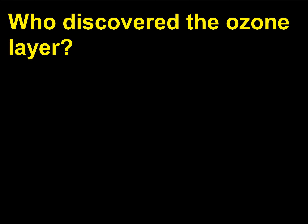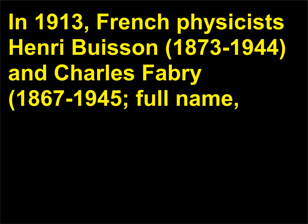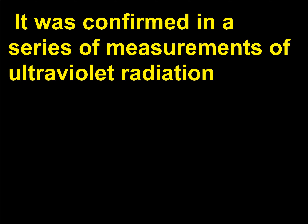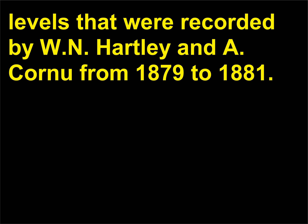Who discovered the ozone layer? In 1913, French physicists Henri Buisson (1873–1944) and Charles Fabry (1867–1945), full name Marie-Paul Augustin Charles Fabry, theorized that an ozone layer existed in the upper atmosphere. It was confirmed in a series of measurements of ultraviolet radiation levels recorded by W.N. Hartley and A. Cornu from 1879 to 1881.